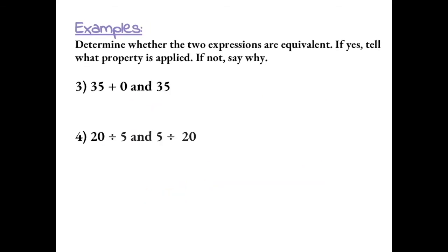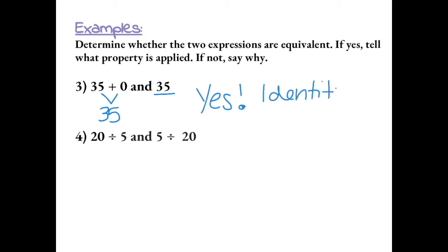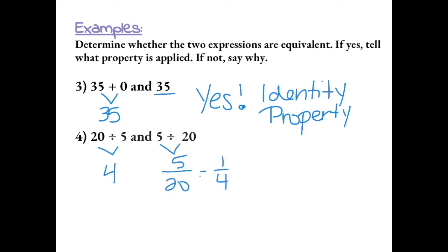Number 3: 35 plus 0 does equal 35, so it is equivalent. We know this because of the identity property, which states that any number added to 0 is always equal to that same number. Number 4: 20 divided by 5 and 5 divided by 20. 20 divided by 5 gives us 4; 5 divided by 20 gives us one-fourth. These are not equivalent. The order in which the numbers are divided has been switched, which looks like the commutative property, but the commutative property does not apply to subtraction or division.